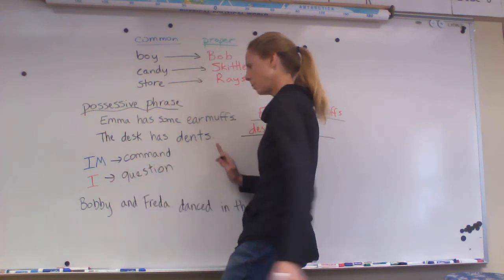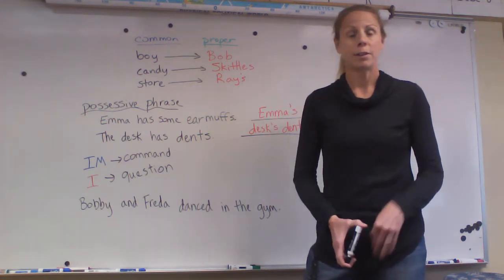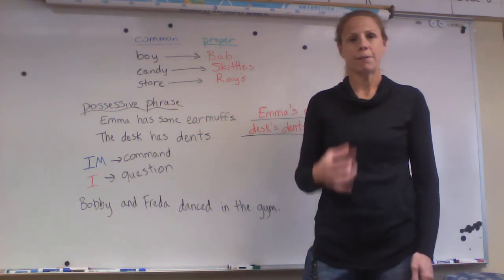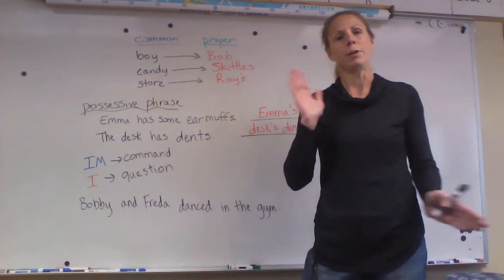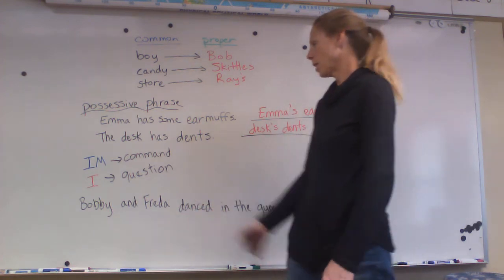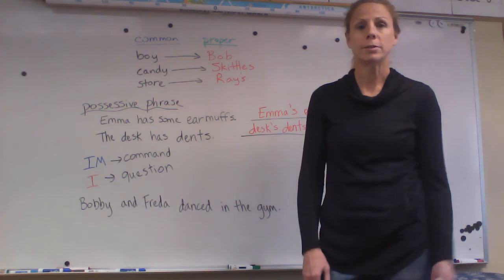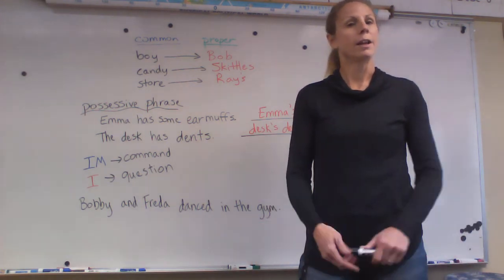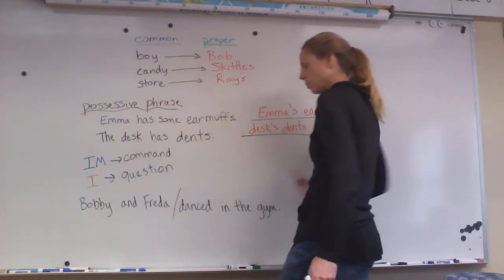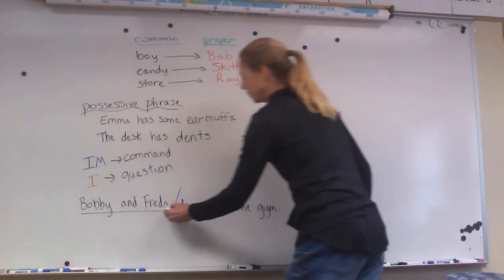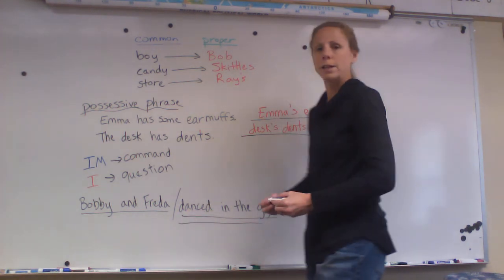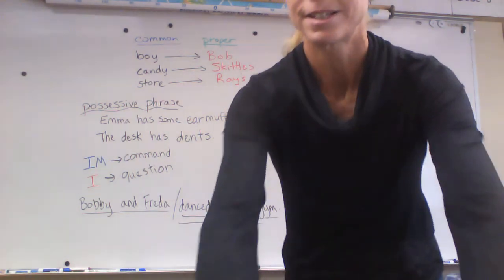Just some helpful hints to remind you. They'll also have you separate the complete subject from the complete predicate, which we do in grammar. Remember, the key is to find the verb. Once you've found the verb, you can separate it and you're good to go. For example: 'Bobby and Frida danced in the gym.' What do they actually do? They dance — that's the action. So the division line goes right before 'danced,' the verb. 'Bobby and Frida' before the line is underlined once, and the predicate after is underlined twice. See you guys, bye!